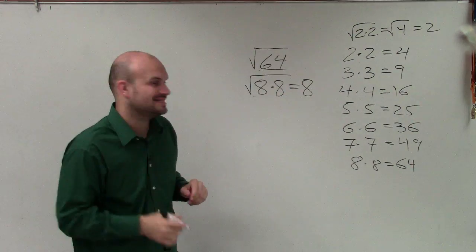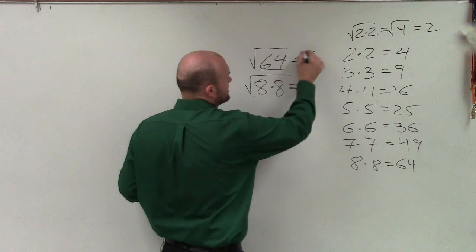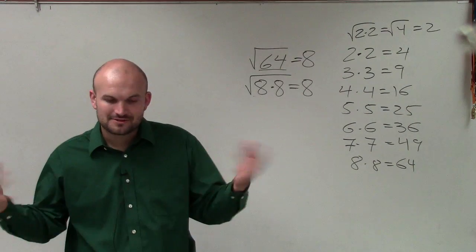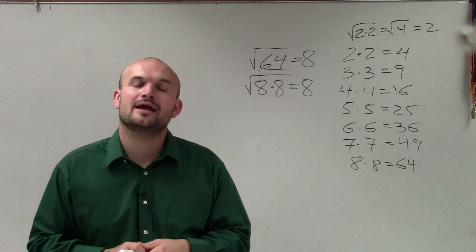the answer is 8. The square root of 64 is 8. That is how you evaluate a perfect square. Thanks, ladies and gentlemen.